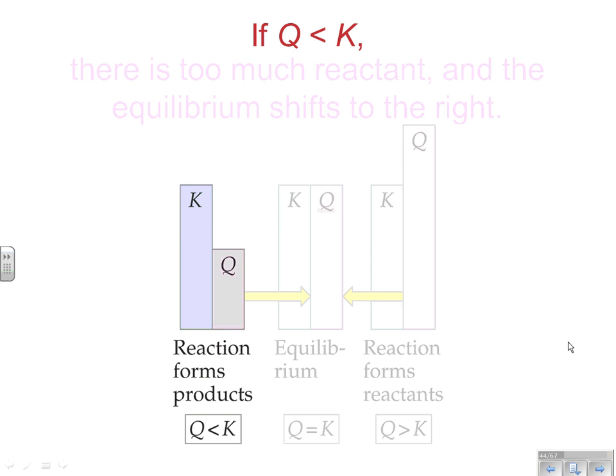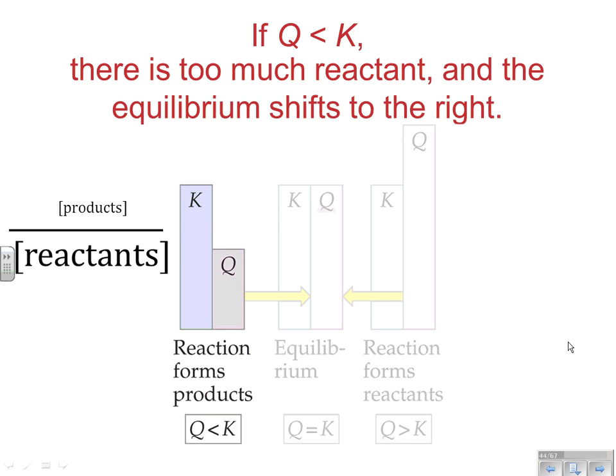On the flip side, if K is greater than Q, since it's products over reactants, that means our number on the bottom was too large or larger than our equilibrium concentrations would be. So we know that we are too far to the left, and we would favor the forward direction in this reaction moving towards products in order to achieve equilibrium.